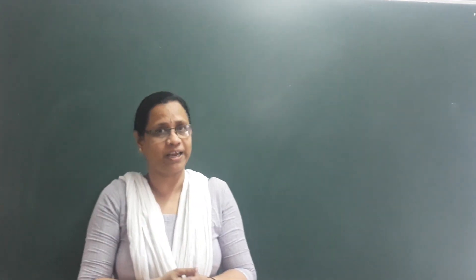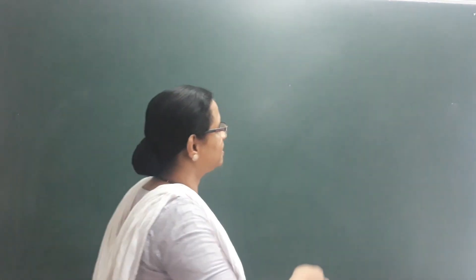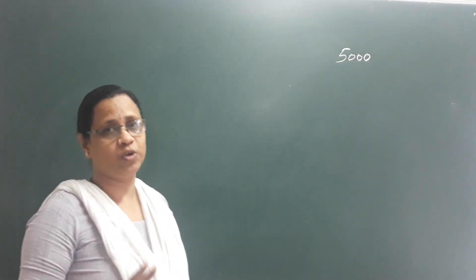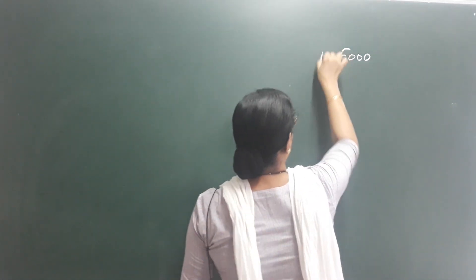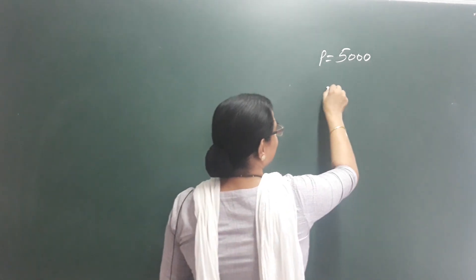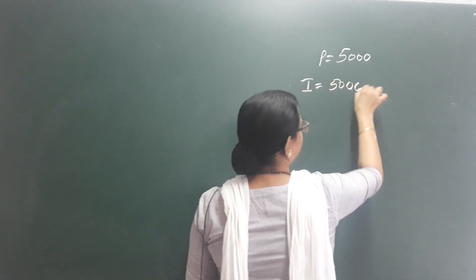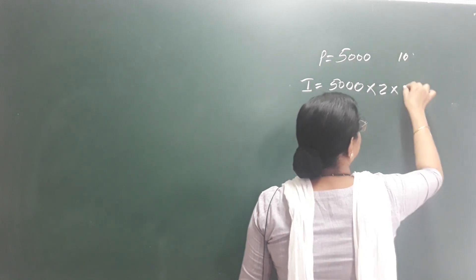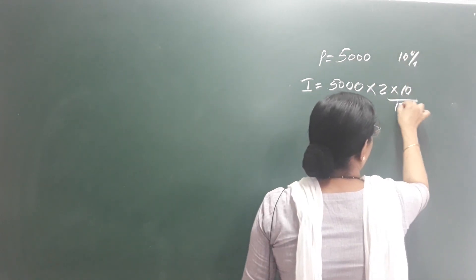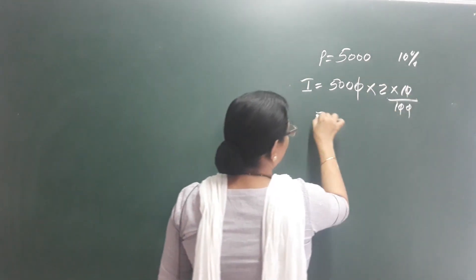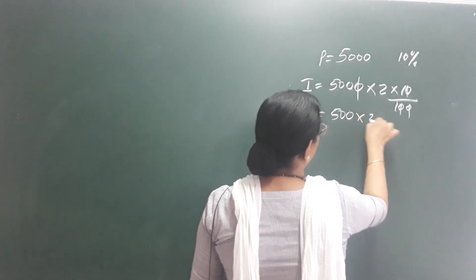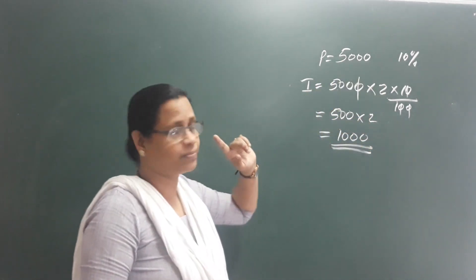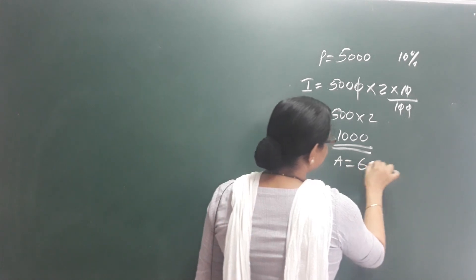And now it's called compound interest. How did we learn simple interest? We deposit 5,000 rupees for 2 years. The principal amount is 5,000. For simple interest over 2 years, the interest rate is 10% per 100. That gives us 500 into 2, so 1,000 rupees interest over two years. The total amount is 6,000 rupees.